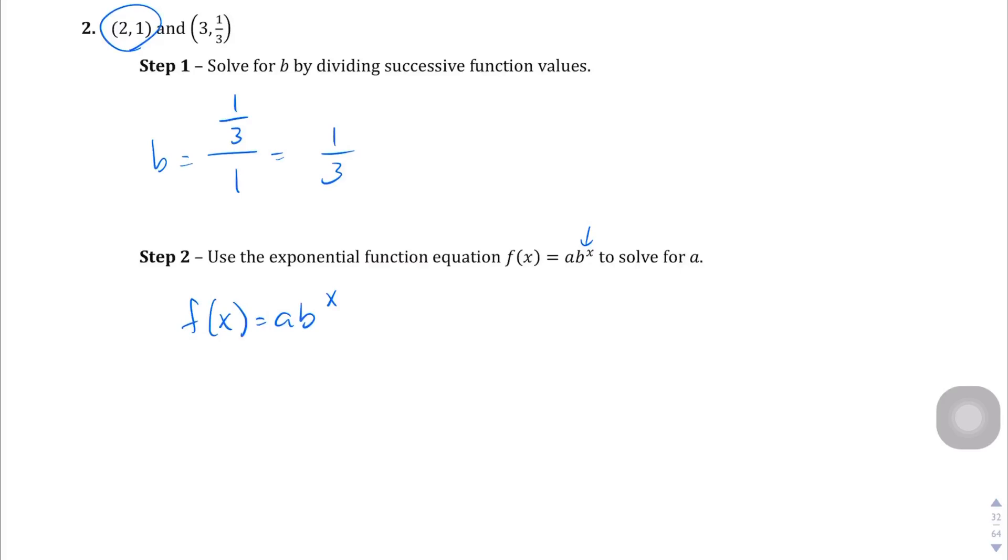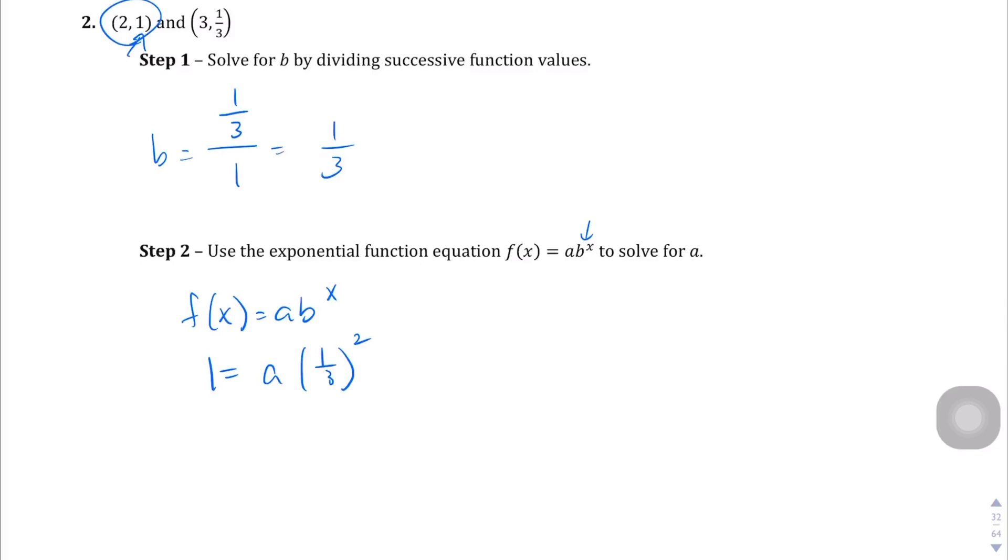And let's just say that the f of x in this case is 1 equals a times the b, which we found as 1 third, to the power of 2. And where do we get the 2? We got it right here. So 1 equals a times 1 third squared, which is 1 over 3 times 1 over 3, which is 1 over 9. And when we multiply both sides by 9, we get 9 equals a. Solve for a.